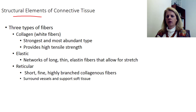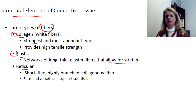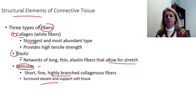Connective tissue has fibers associated with it. The three types are collagen, elastin, and reticular. Collagen means strong — this is what gives connective tissue its strength, and there's a lot of it. Elastic fibers allow for stretch. Think about where the connective tissue is and what it does, and that will tell you if it has more elastic or more collagen fibers. Reticular fibers — 'reticular' means web-like — these are highly branched fibers that form a support scaffolding, surrounding and supporting tissues. They form a web to hold your tissues and blood vessels in place.